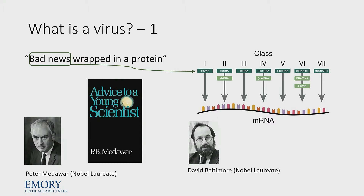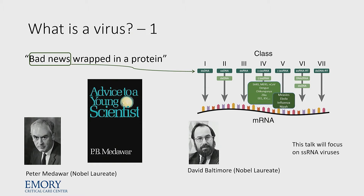Baltimore organized viruses according to their nucleic acids, shown in the top row. We're going to be focusing today on classes 4 and 5, because those are the major pathogens we've dealt with in the 21st century. Both are single-stranded RNA viruses. Some come in as the plus strand, such as coronavirus, and have to be transcribed into the negative strand. Some come freely as the negative strand, such as measles, Ebola, and influenza. Most of our talk focuses on these single-stranded RNA viruses.